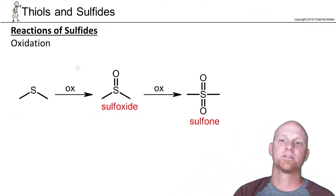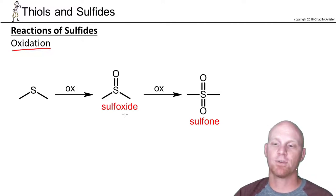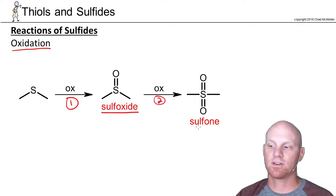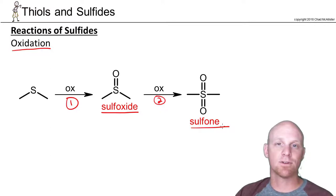Now the last reaction of sulfides is oxidation. It turns out two steps of oxidation are possible. If you do just one step of oxidation, your sulfide turns into a sulfoxide. And if you do a second step of oxidation, you can turn that into a sulfone. There are a variety of different oxidizing agents that are capable of pulling this out. These are fairly readily oxidizable. You should just realize two steps of oxidation are possible - one step leads to the sulfoxide, two steps leads to the sulfone.